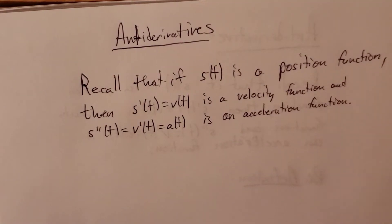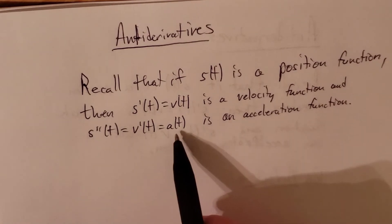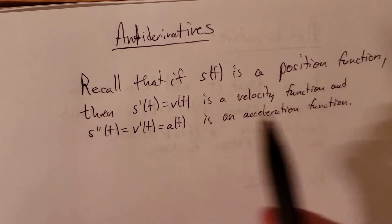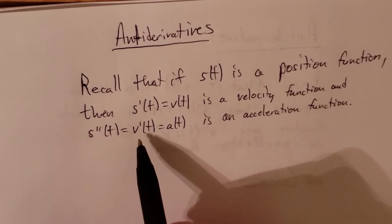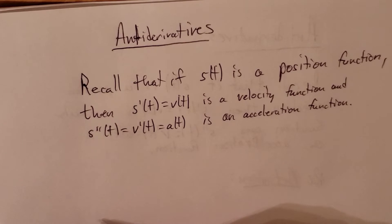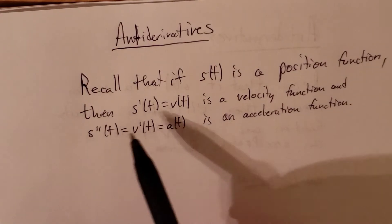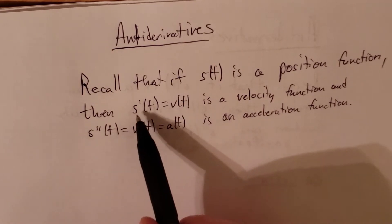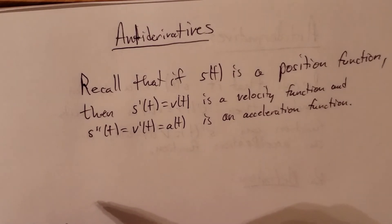In other words, if we have an acceleration function, we can take the antiderivative and find the velocity function v of t. Or if we have a velocity function, we can take the antiderivative to find s of t, some position function.